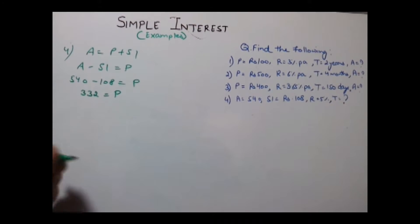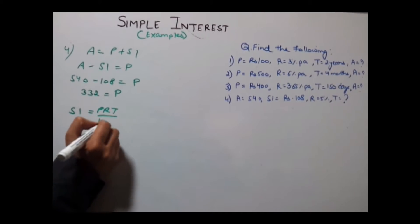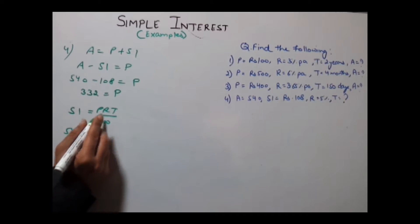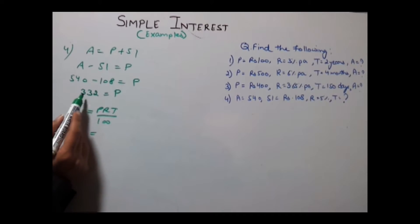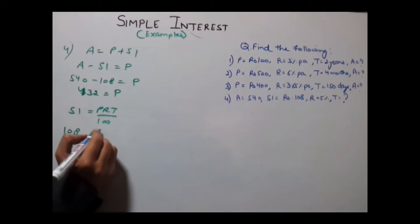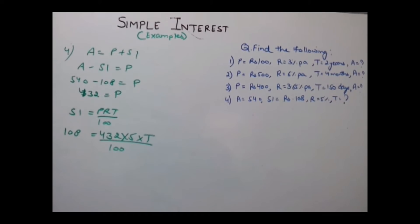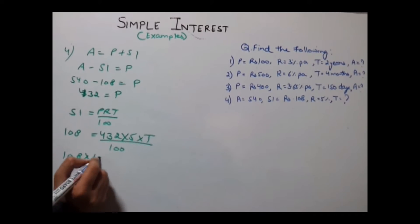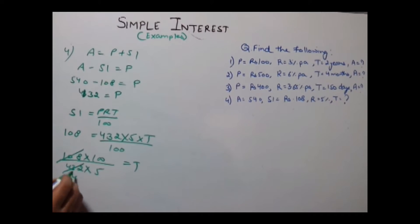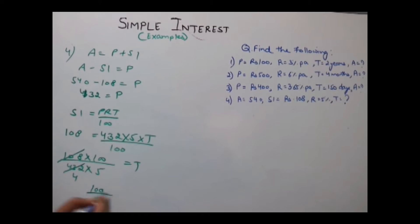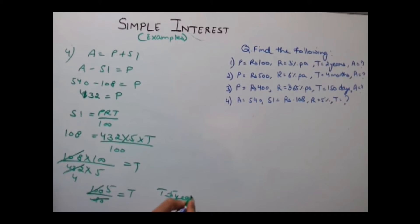Our principal is 432 and we need to find the time. Using the simple interest formula, SI = PRT divided by 100: SI is 108, P is 432, R is 5%, and T is unknown. So time T equals 108 × 100 divided by 432 × 5. Since 108 × 4 = 432, this simplifies to 100 divided by 4 × 5 = 20, giving 100 divided by 20 = 5. So our time is 5 years.